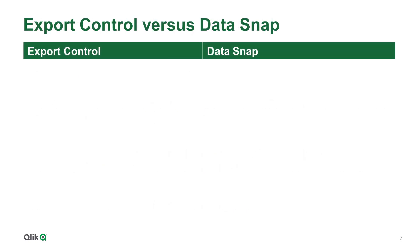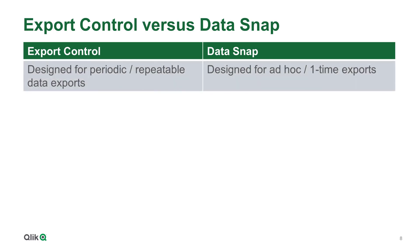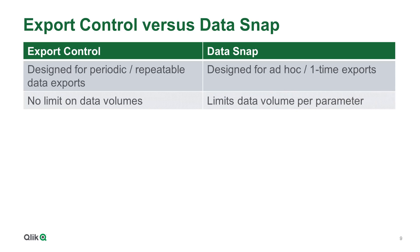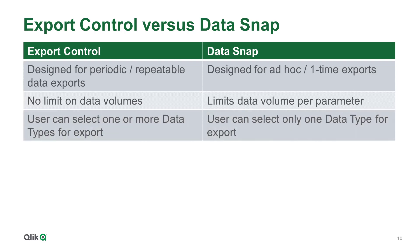Although Export Control and Datasnap are both used to initiate exports, there are several notable differences between them. Export Control is designed for periodic or repeatable data exports, while Datasnap is designed for ad hoc or one-time data exports. Export Control has no limit on data volumes, whereas Datasnap has a parameter which limits the amount of data that can be exported. Export Control provides users the ability to select one or more data types, while Datasnap limits the user to selecting just one data type.